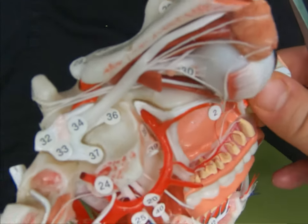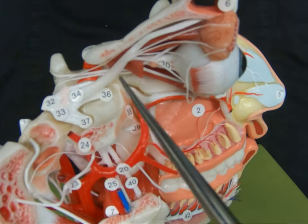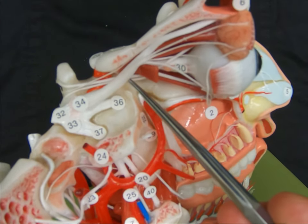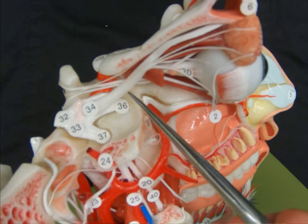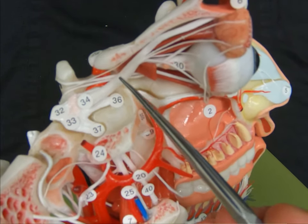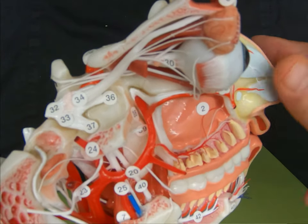And this is where we can see these three branches along with the ophthalmic branch of cranial nerve 5, which we'll discuss in a later video, all exiting through the superior orbital fissure.